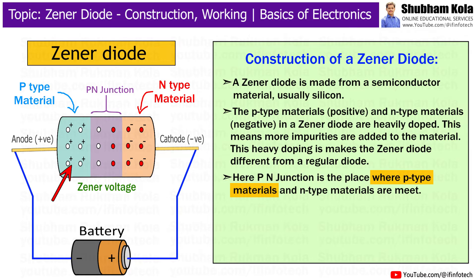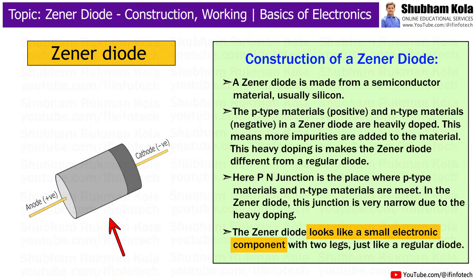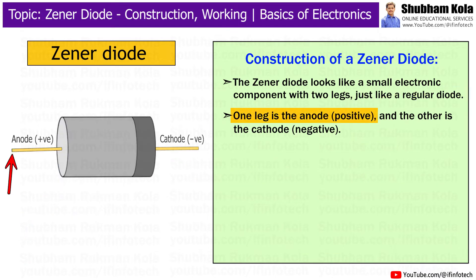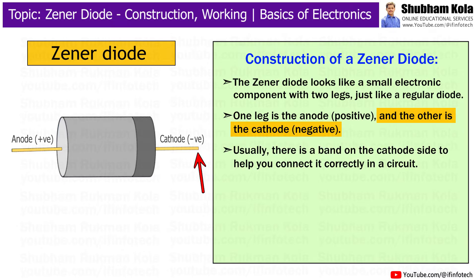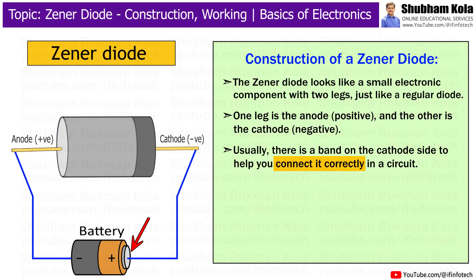The p-n junction is the place where the p-type material and n-type material meet. In the Zener diode, this junction is very narrow due to the heavy doping. The Zener diode looks like a small electronic component with two legs, just like a regular diode. One leg is the anode, which is the positive side, and the other is the cathode, the negative side. Usually, there is a band on the cathode side to help you connect it correctly in a circuit.